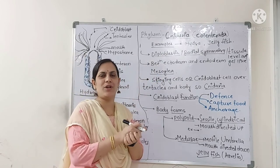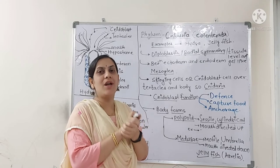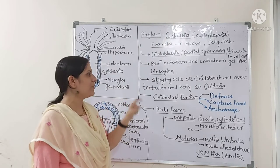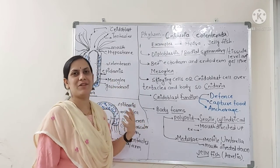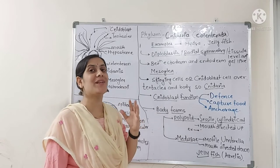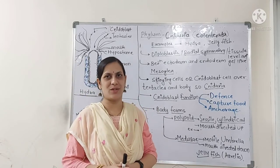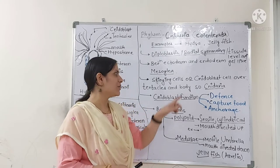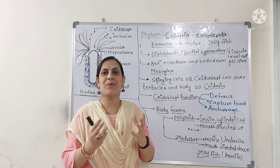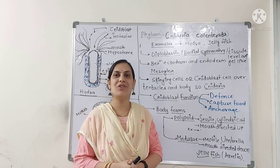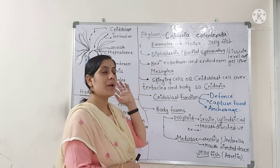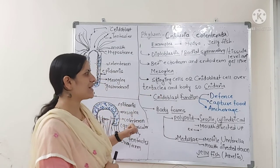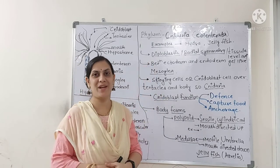In between the ectoderm and endoderm, they have a gelatinous material known as mesoglea. The name Cnidaria is given due to the presence of some specialized cells known as cnidoblast cells, also called stinging cells. These cnidoblast cells are present all over the body as well as on the tentacles of hydra, jellyfish, and other cnidarians.